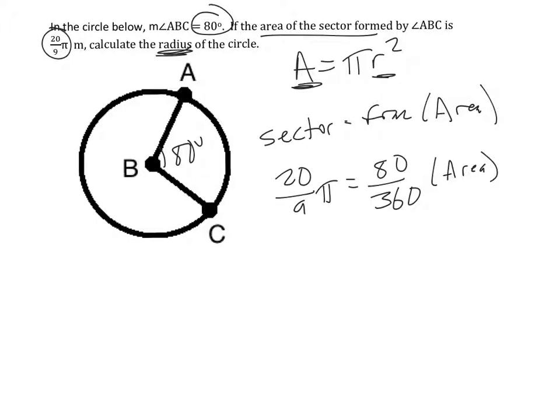So the way to get area by itself is we multiply by the inverse, the reciprocal here. If 80 over 360, we multiply by the opposite of that, 360 over 80 on both sides. So if we do that, that will cancel this and leave me with just area. So the area of the full circle is going to equal 360 over 80 times 20 over 9 times pi.